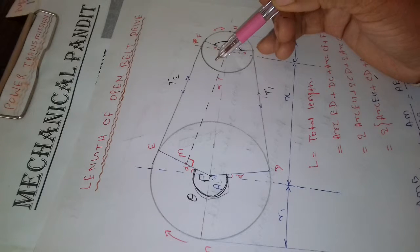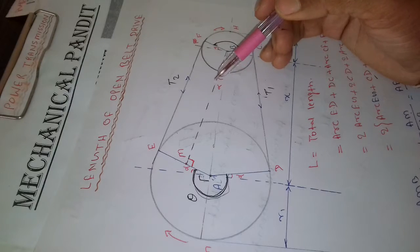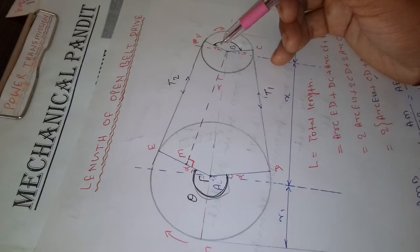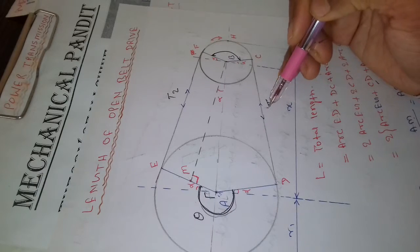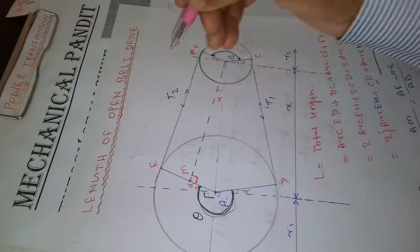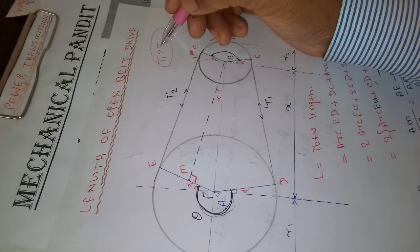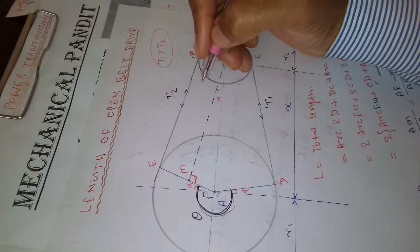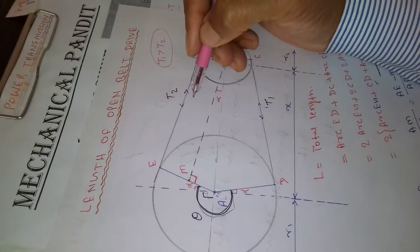We have already discussed in various previous videos that the driving pulley pulls the belt from one side and drives it to the other side. So one side is the tight side and the other is the slack side. T1 will always be greater than T2, where T1 and T2 are the tensions in the tight side and slack side respectively.